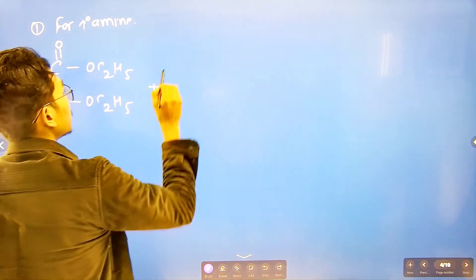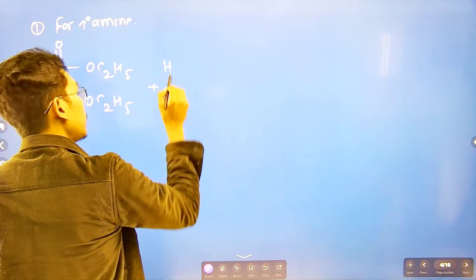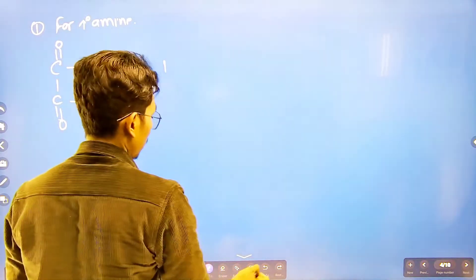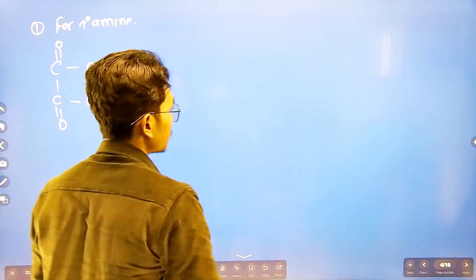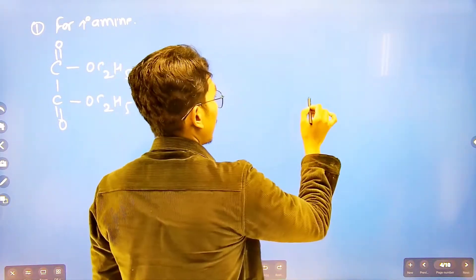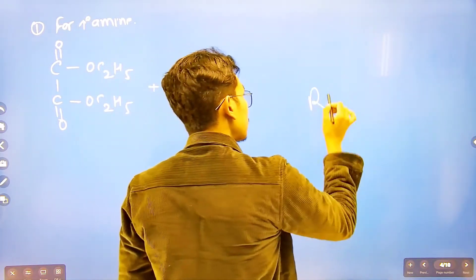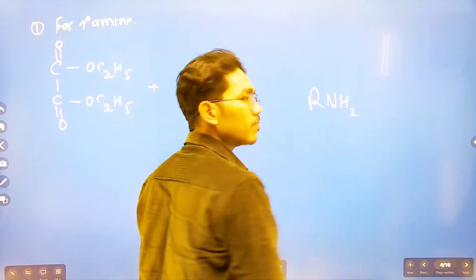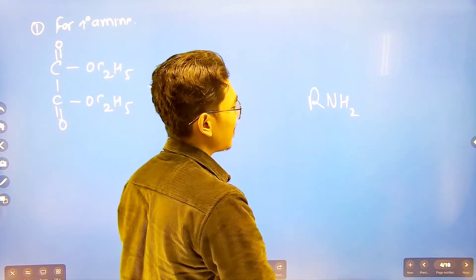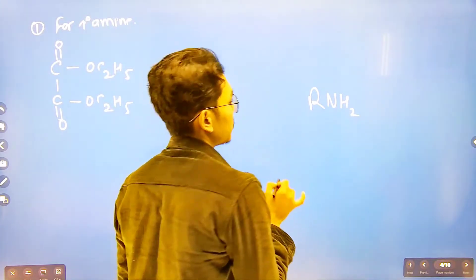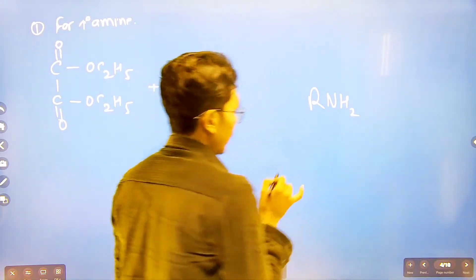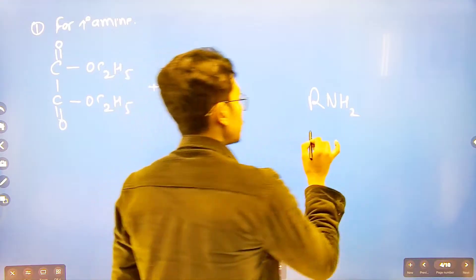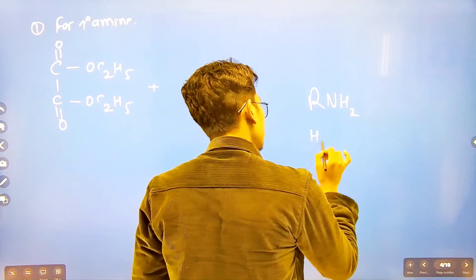The reaction of primary amine with diethyl oxalate gives a product. R-NH2 reacts, and the replaceable hydrogen on the nitrogen participates in the reaction.